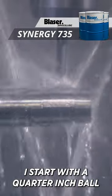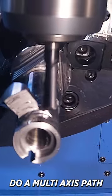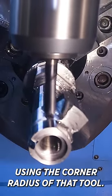I start with a quarter-inch ball, finish as much as I could, then I take a quarter-inch bullnose, do a multi-axis path going around the part using the corner radius of that tool.